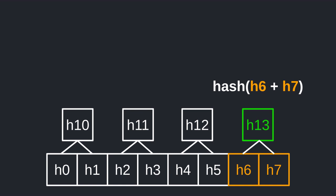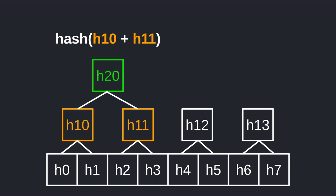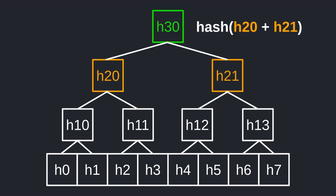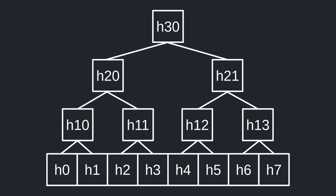Next we take these computed hashes and repeat the whole process. Eventually you'll get a single hash, and this is called the root hash. This is how you construct the Merkle tree.